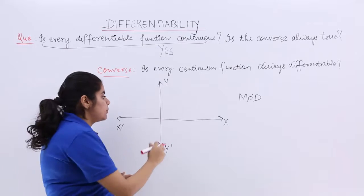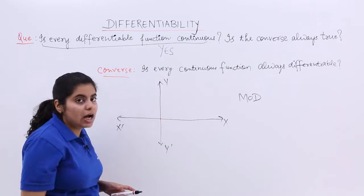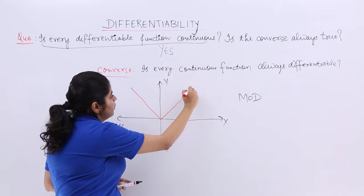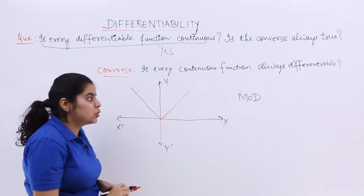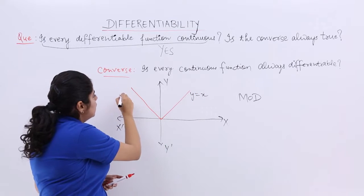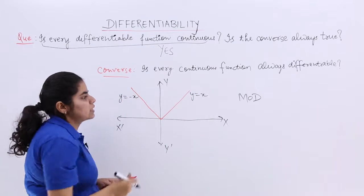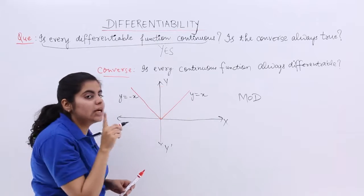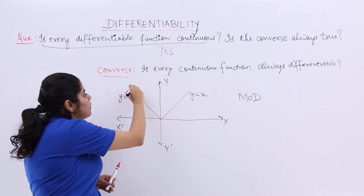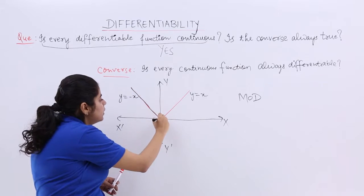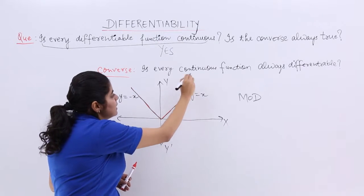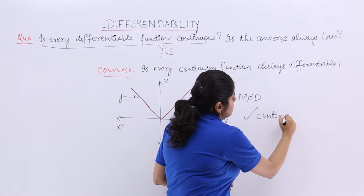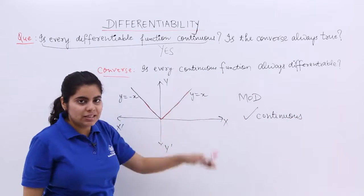Now mod function, suppose I have to draw the graph of mod x. It is something like this which we have already drawn. Here it is y equals x, here it is y equals minus x. This graph we also studied in the concept of continuity and we said that we can always draw this graph without lifting my pen or pencil, hence this graph is continuous. So tick mark means yes it is continuous.